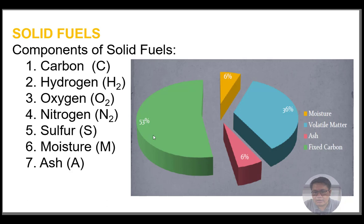For carbon, we have about 50 to 53 percent of the total mass. For moisture, we have 6 percent.